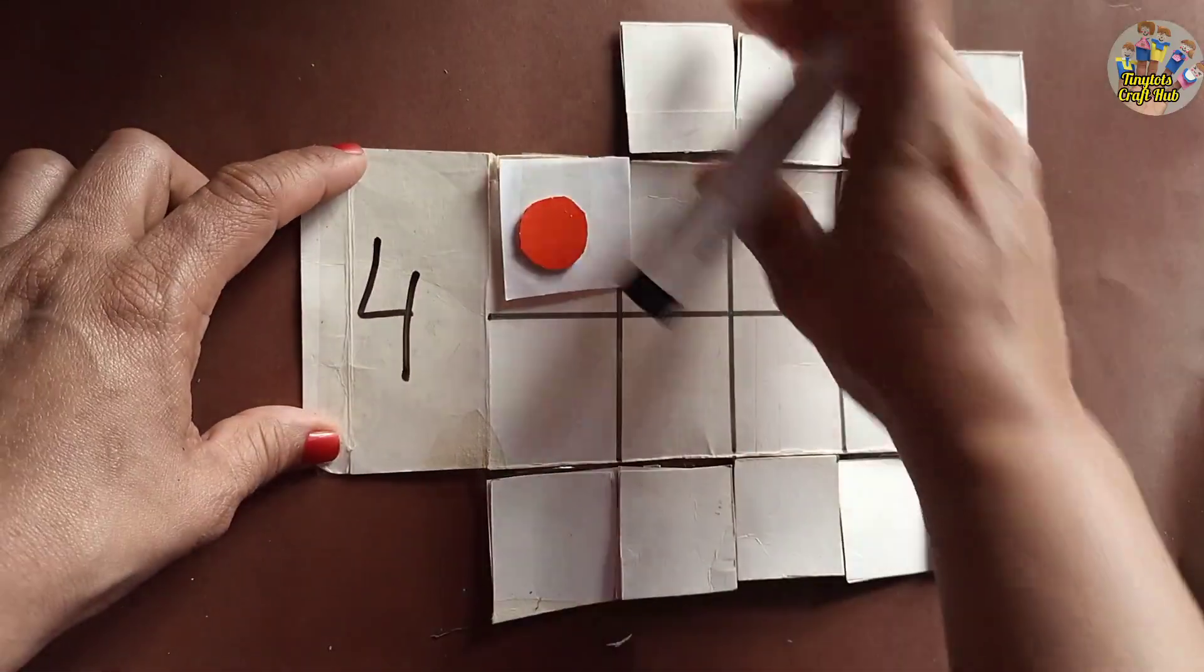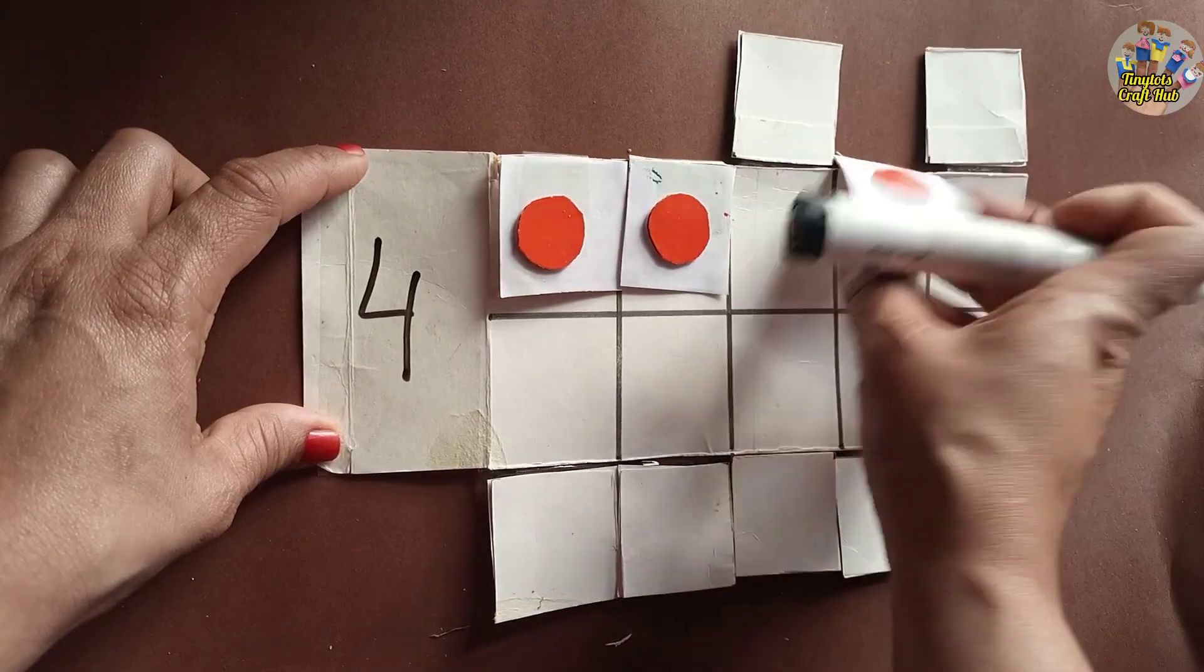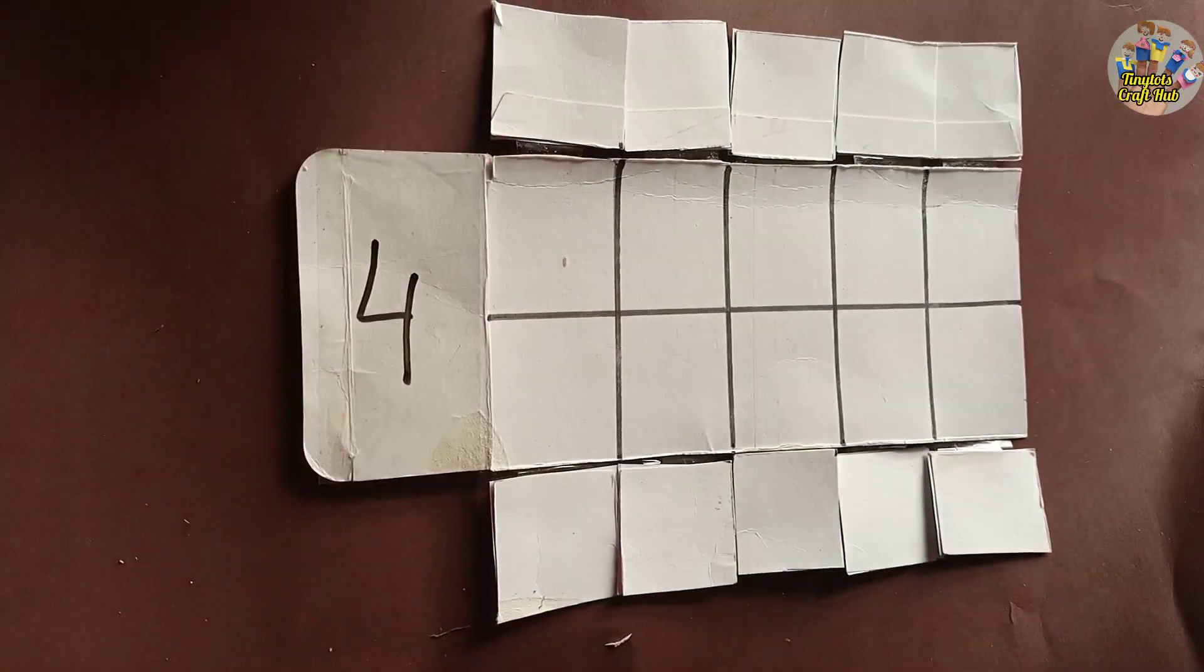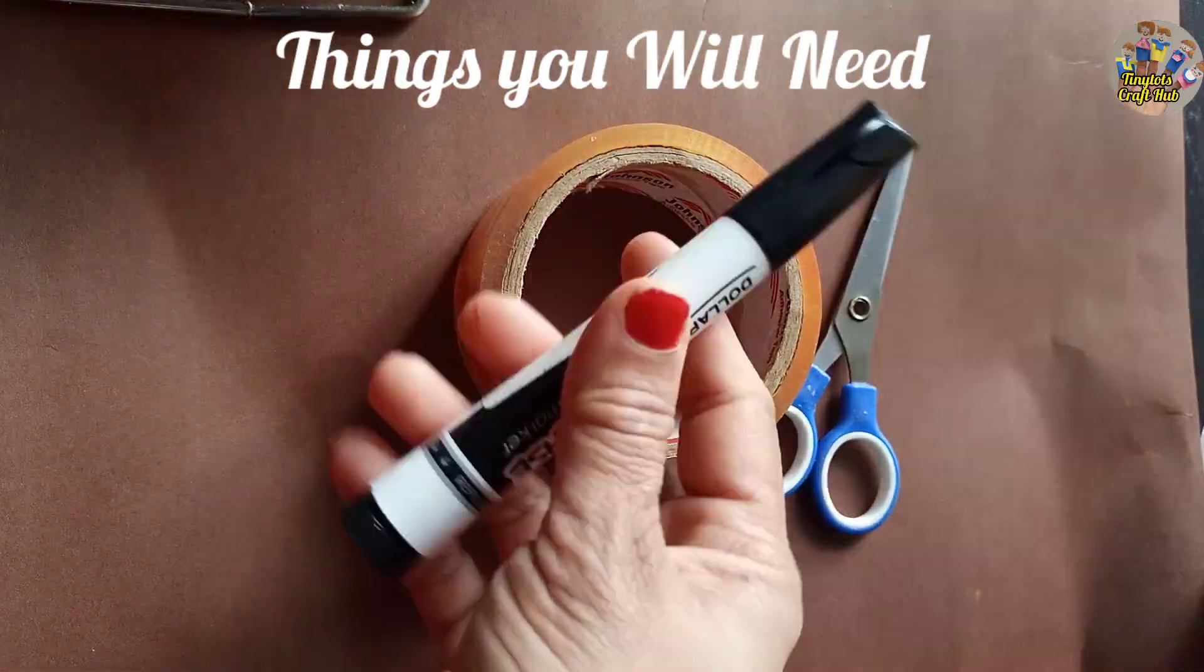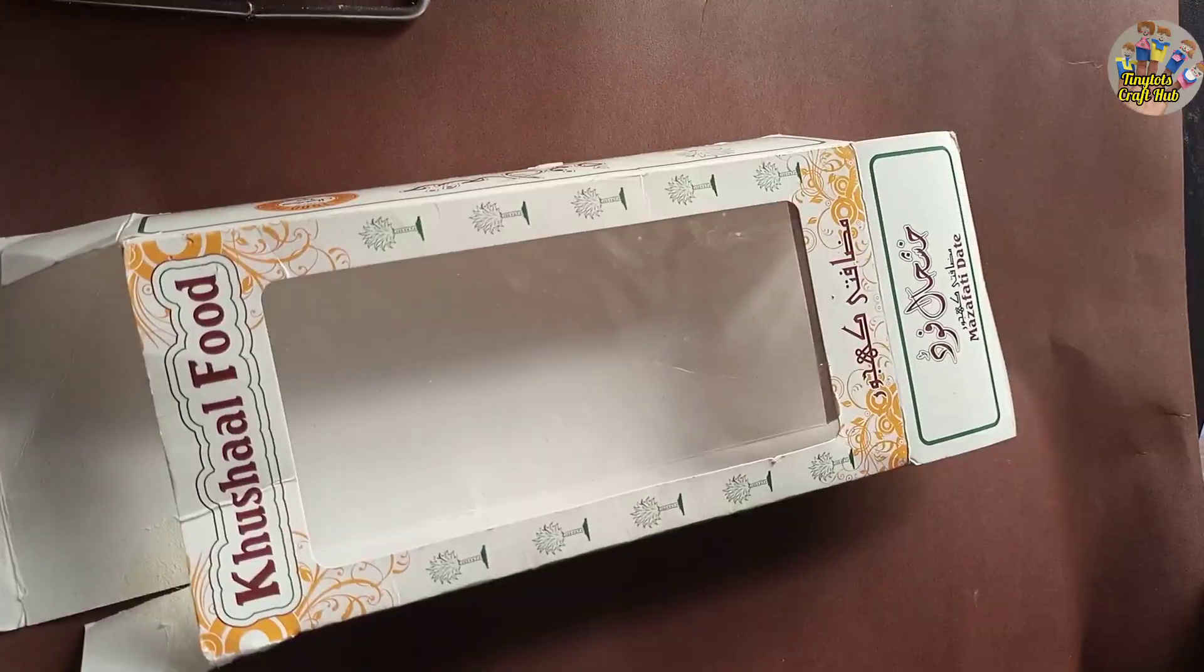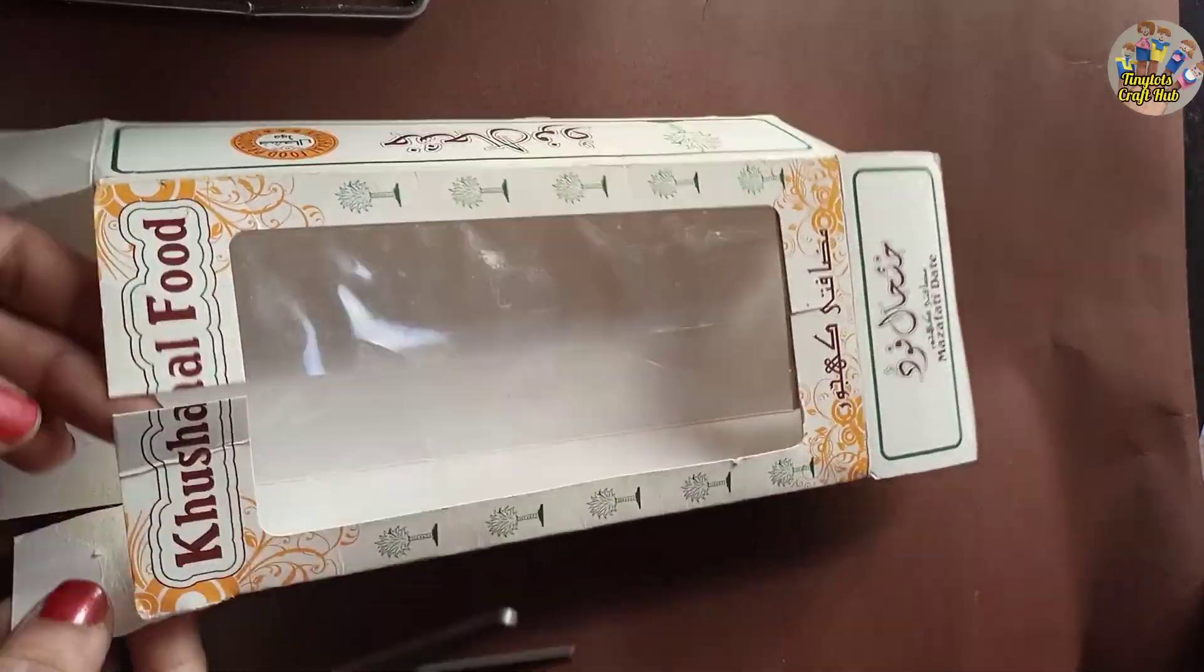Hello friends, let's make a very useful and fun ten-board flip activity chart for toddlers and preschoolers. This is a very fun math activity. You'll take a small box - I'm taking a dates box.